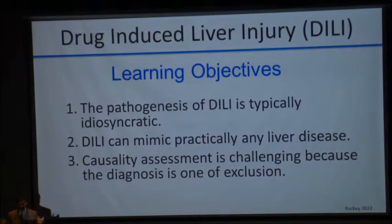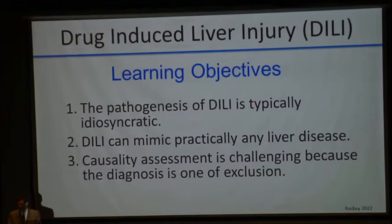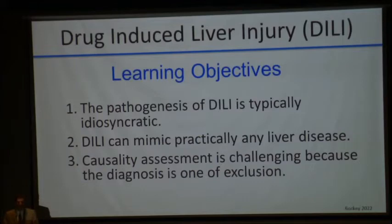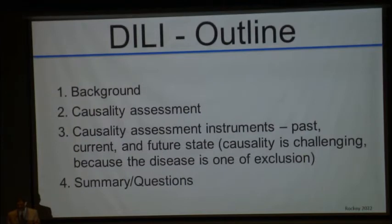Let me tell you what I'm going to try to cover today. Our learning objectives — I'm going to try to keep this simple, around 20 minutes. We're going to talk about idiosyncratic DILI. I'm not going to get into pathogenesis that much, as it is largely unknown and quite complicated. I'm going to emphasize some diagnostic criteria and the point that drug-induced liver injury can mimic essentially any liver disease. I'm going to focus on causality assessment and why it's challenging, largely because it's a diagnosis of exclusion. I'll also talk about causality instruments, including a new one we've developed, and then I'll summarize.